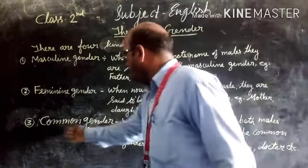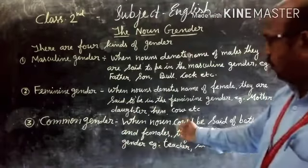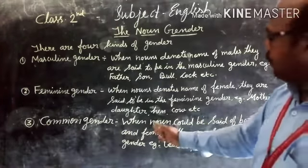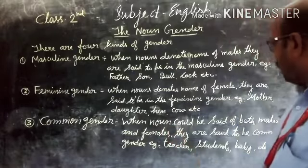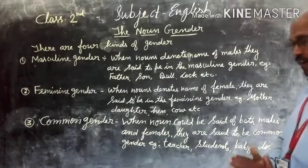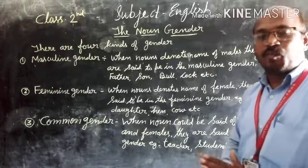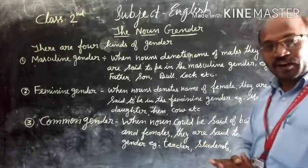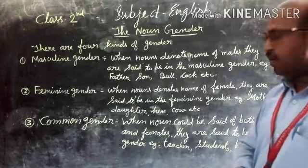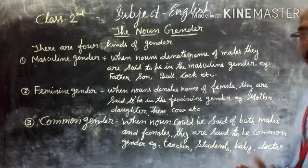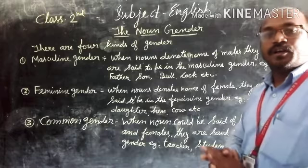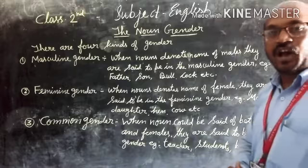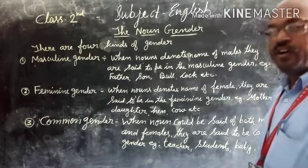Another one is common gender. When nouns could be said of both males and females, they are said to be in common gender. Examples: teacher — a teacher can be both a man or a woman. Student — students can be boys or girls. Baby — a baby can be a boy or girl. Doctor — a doctor can be a man or a woman.